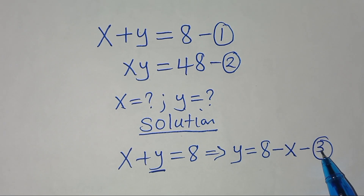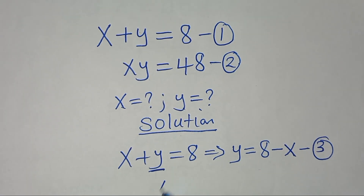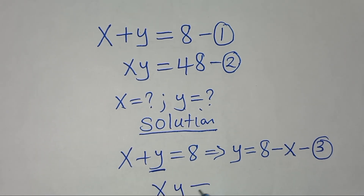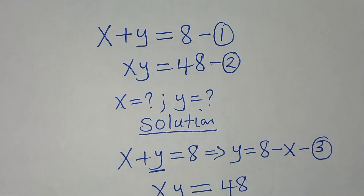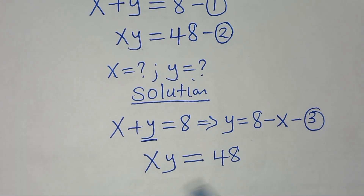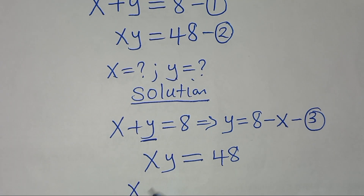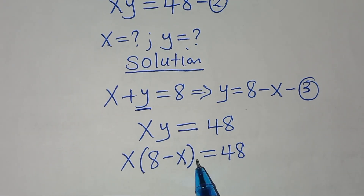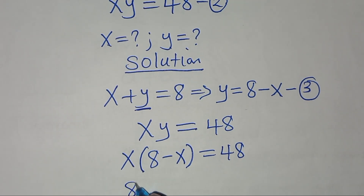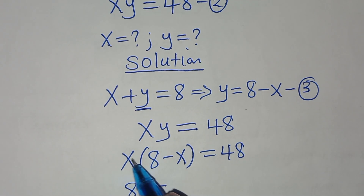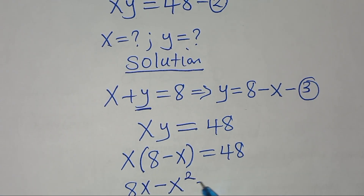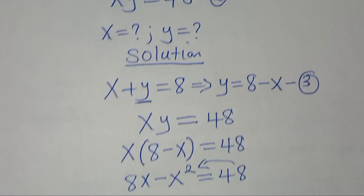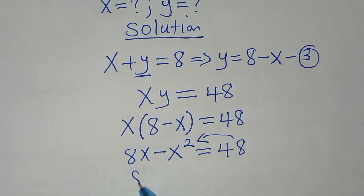Let's substitute equation 3 into equation 2. Equation 2 is x times y equals 48, so substituting equation 3 gives us x times (8 minus x) equals 48. Opening the bracket: 8x minus x squared equals 48.